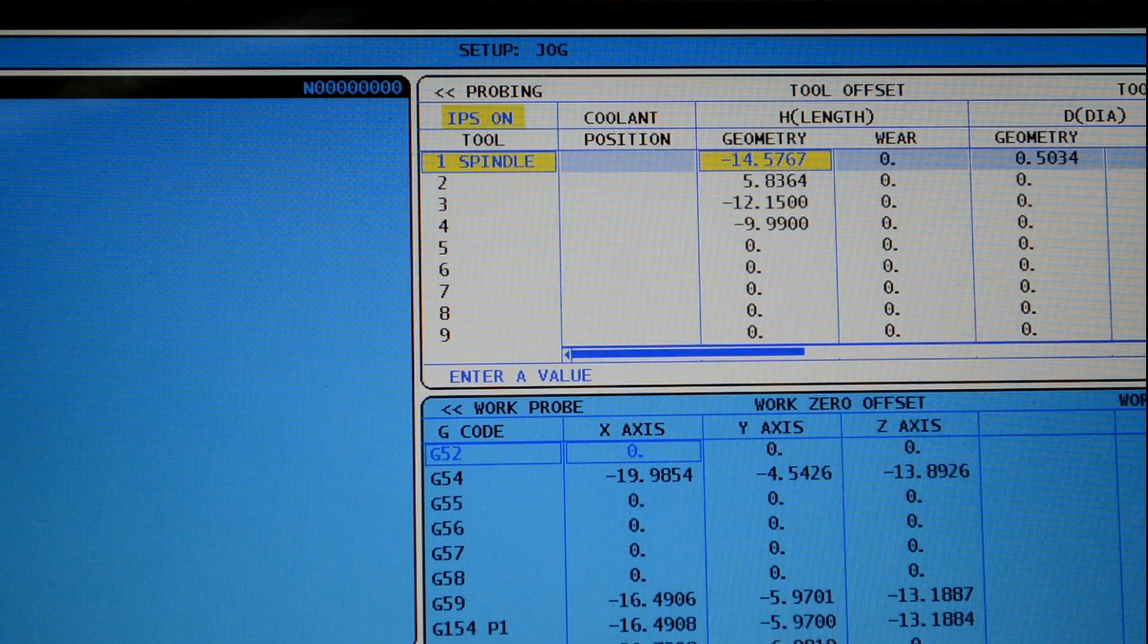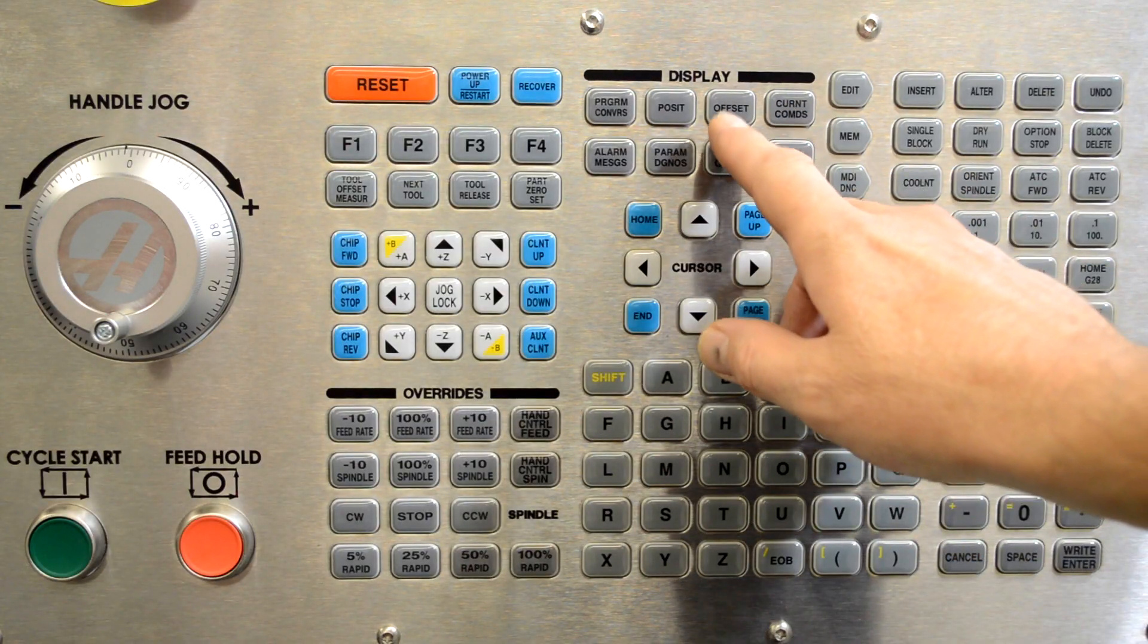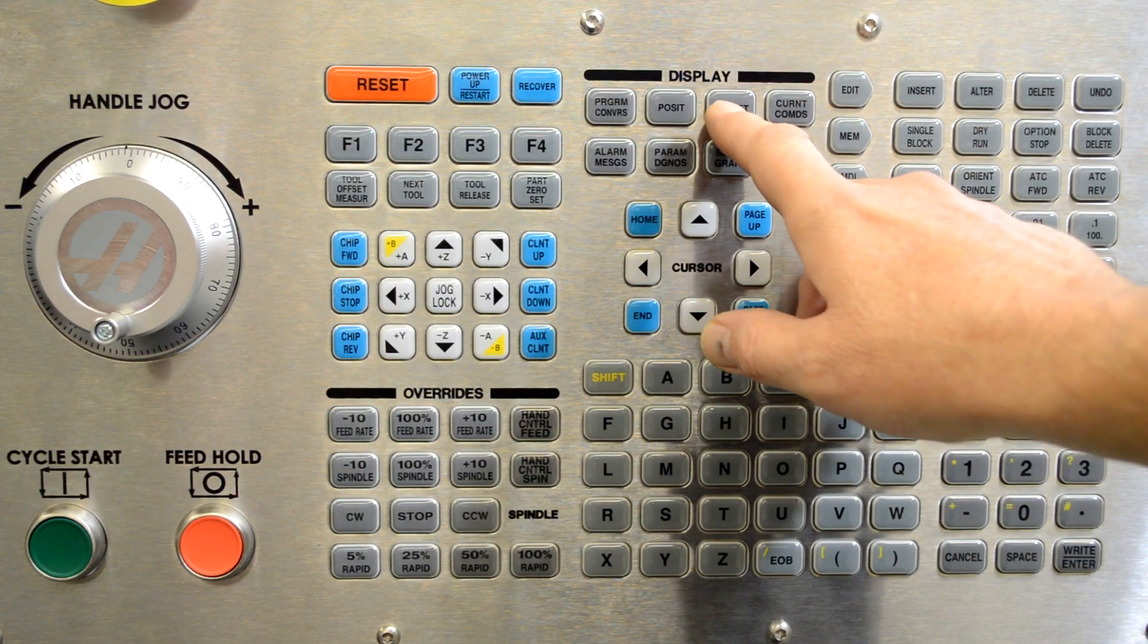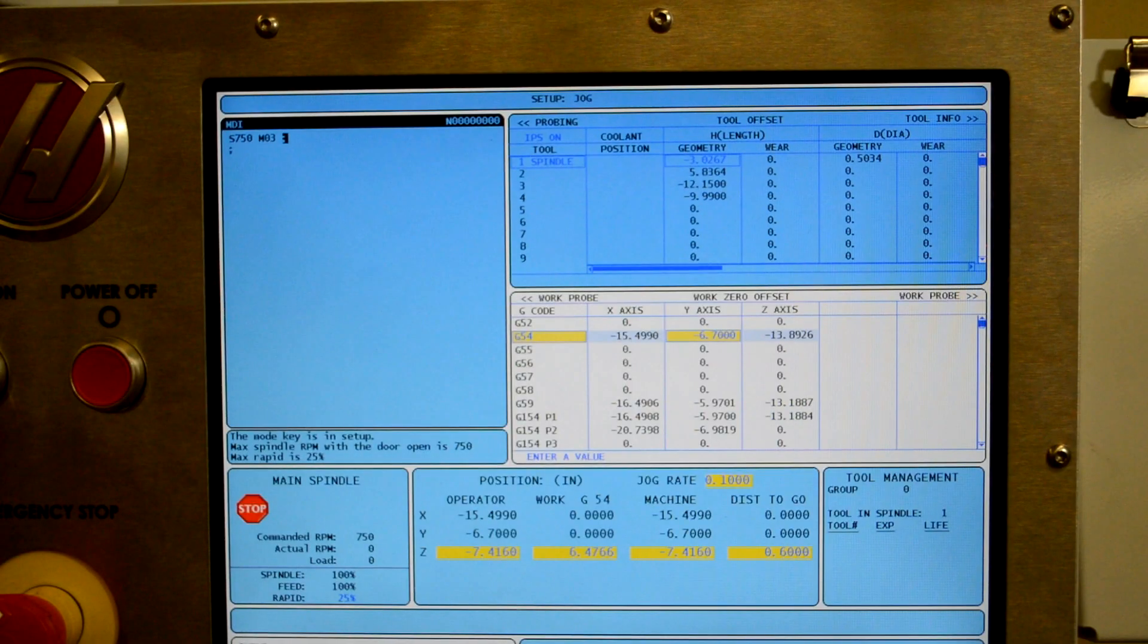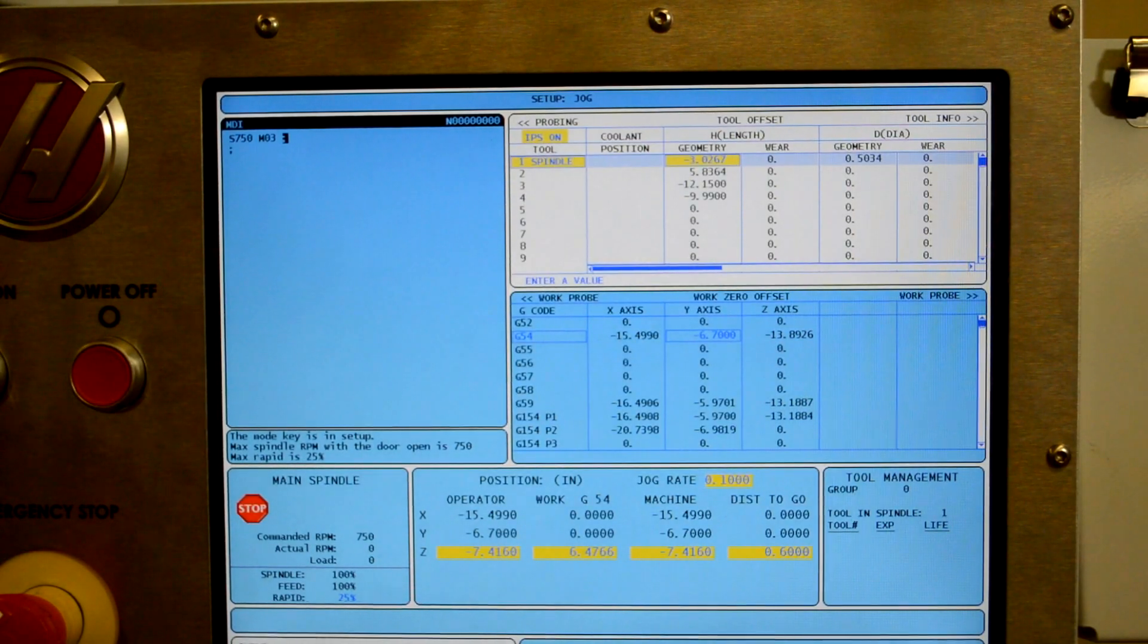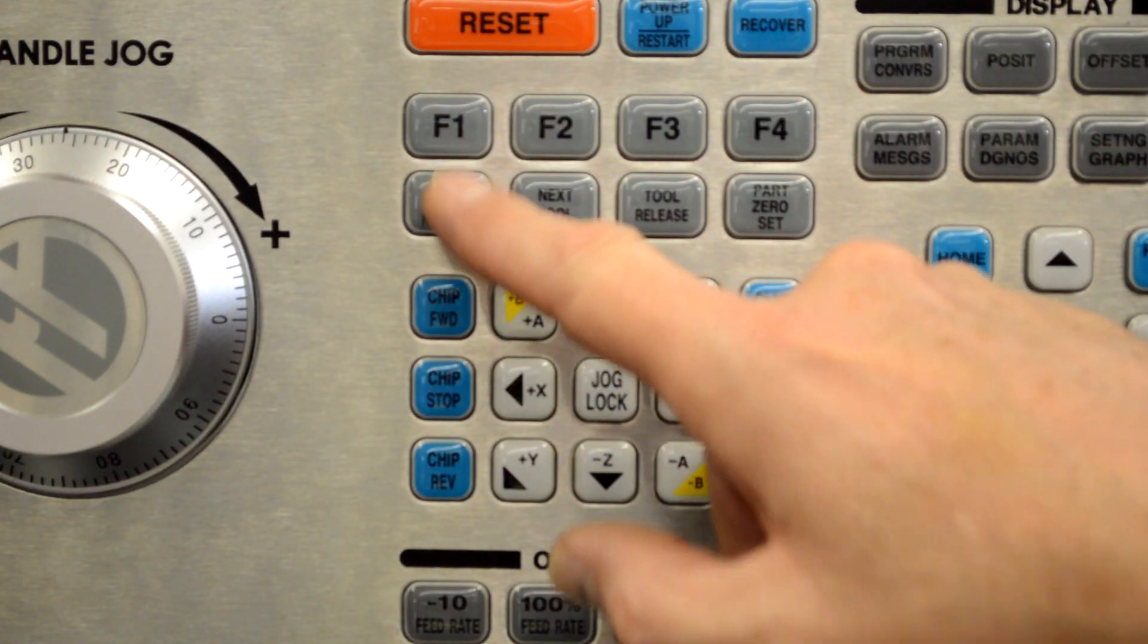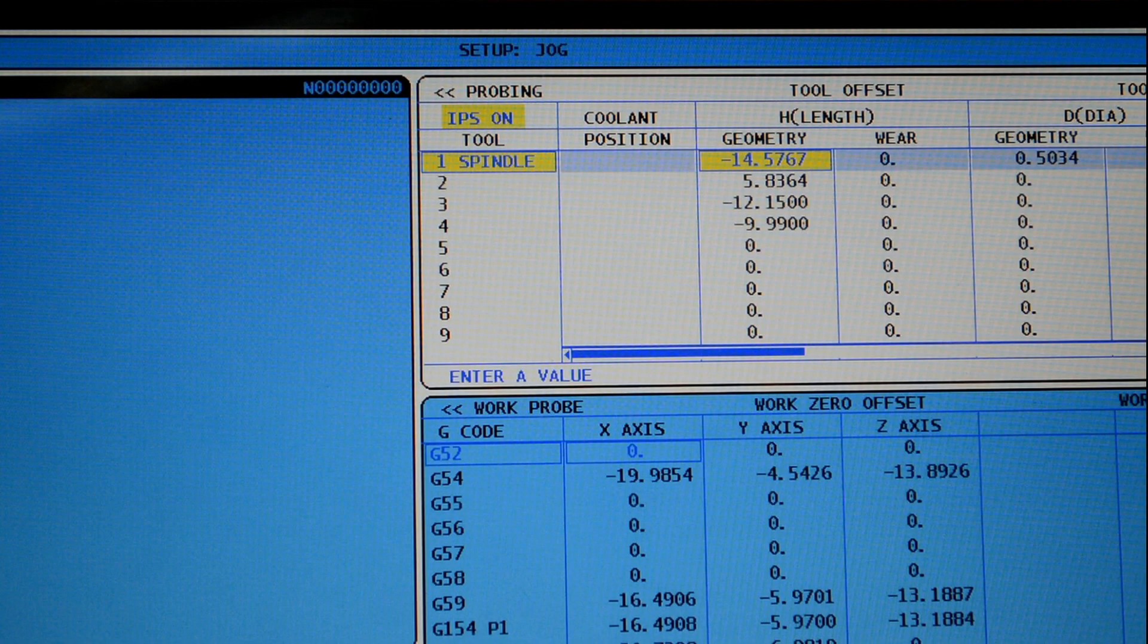And I would do that by going to the offset screen and scrolling over to the diameter. And as soon as I'm highlighted on that, I would put in minus 0.0125 and hit tool offset measure. And that would automatically change that diameter for me. And if you could see it, the tool would move in 12 and a half thousandths and be right up against the edge of the part.